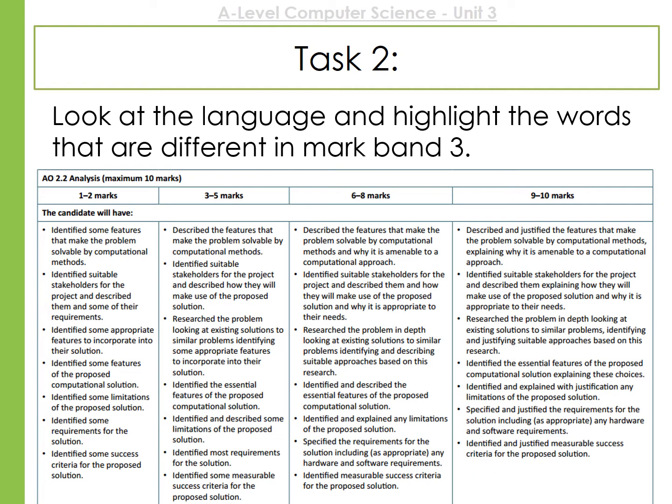Here's the mark scheme for the analysis section of the project. It is 10 marks and you want to be aiming for the top mark band, 9 to 10 marks. When you look at the wording, you'll notice there are only one or two words different between the 9–10 and 6–8 mark bands — those words are 'justify' and 'explain'. It's really important that you are justifying and explaining your answers throughout this section.